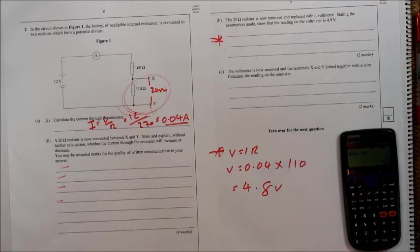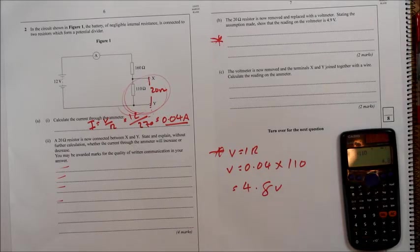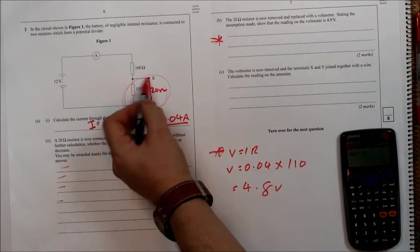Now then, what's the assumption made? The assumption made is that the voltmeter has negligible, or sorry, infinite resistance and therefore does not affect the overall resistance here.